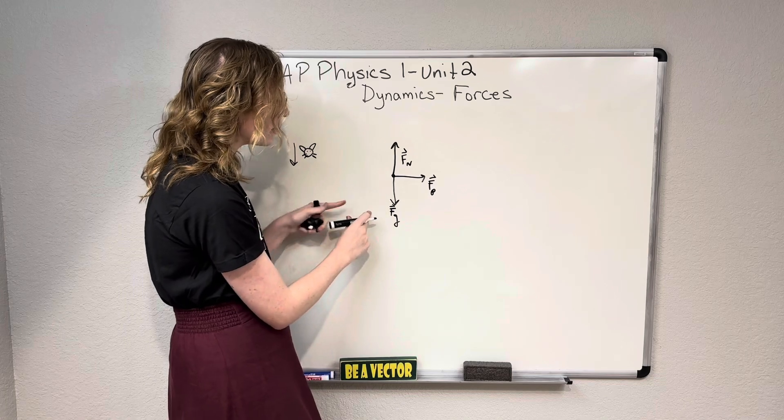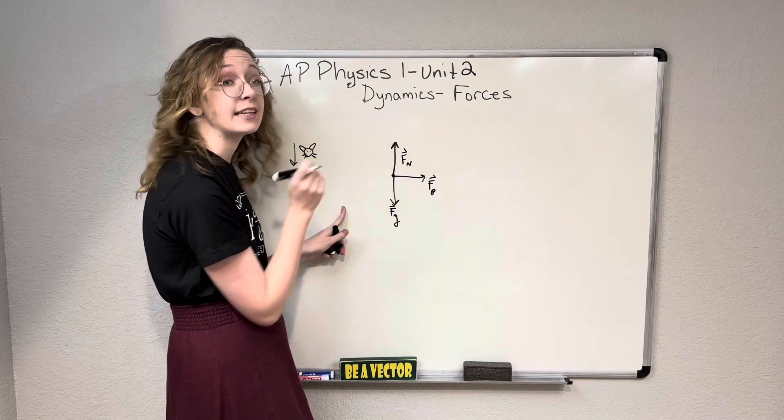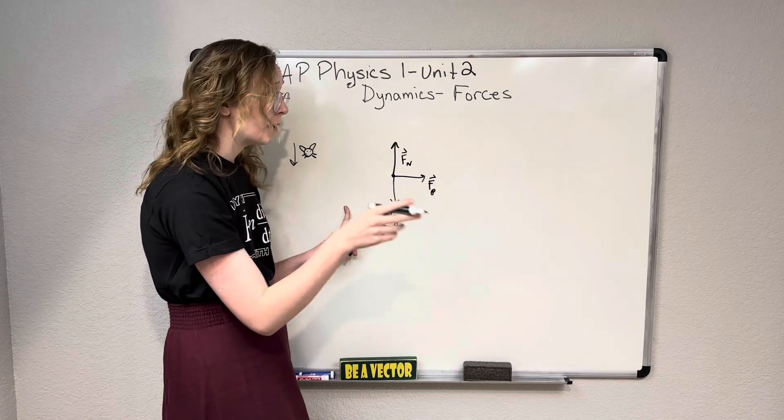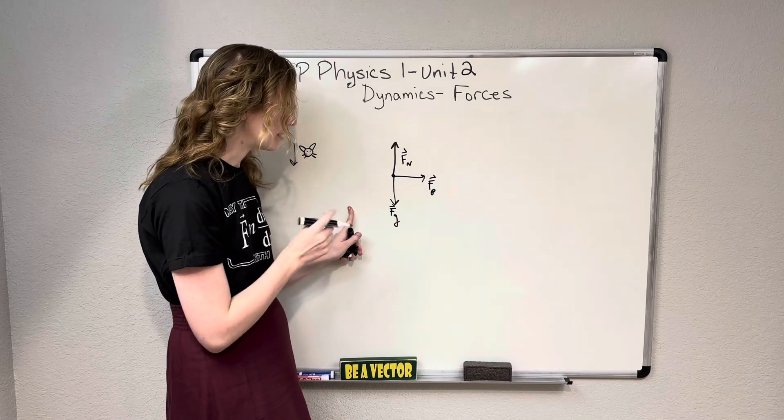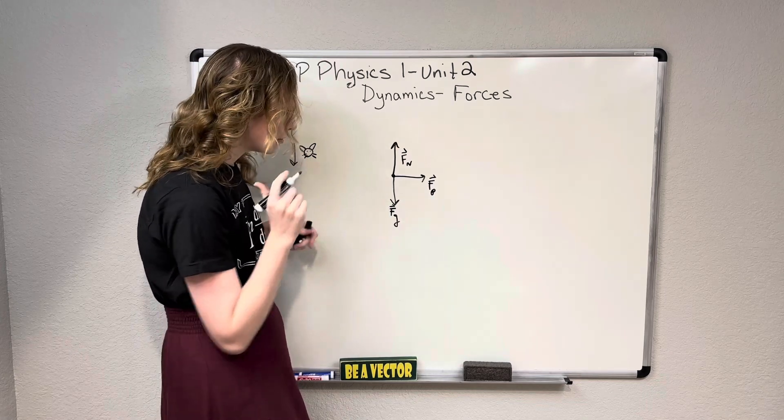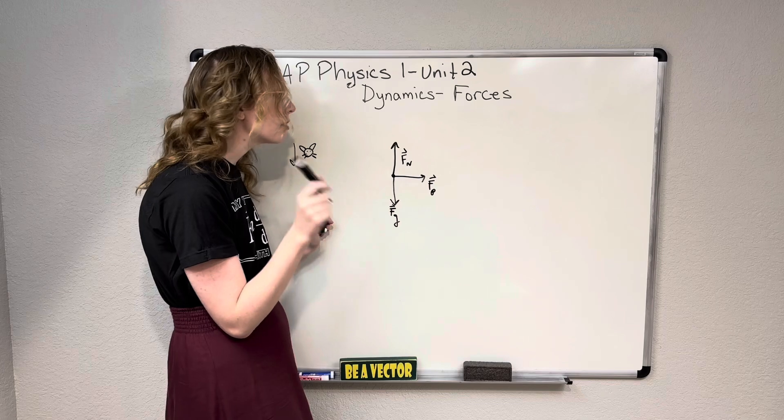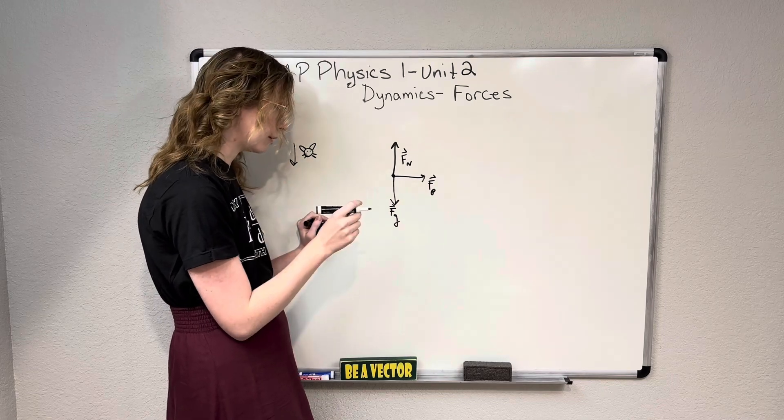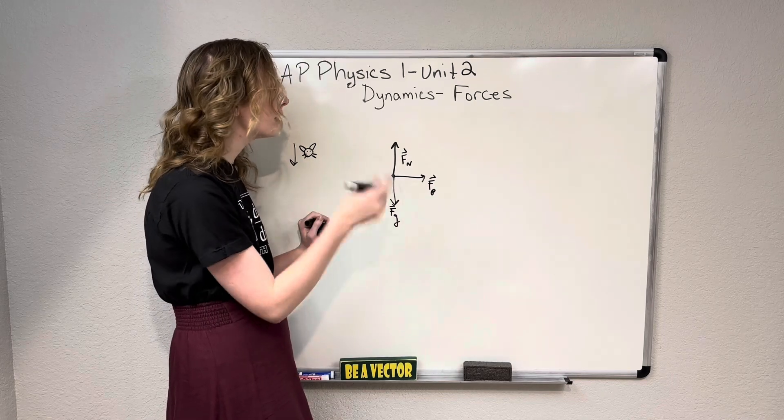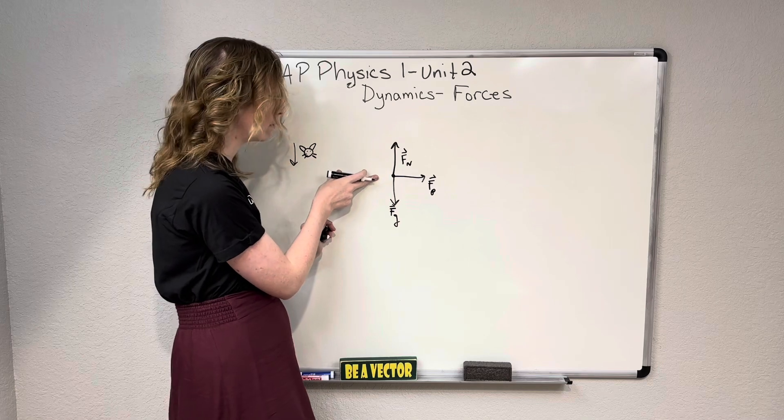So currently, in this drawing right here, Isaac would be having a net acceleration going this way, because your net force is equal to mass times acceleration, right? But since Isaac isn't moving, we know that his net acceleration has to be zero, or his acceleration has to be zero, which means we need a force that cancels out the force of the push.